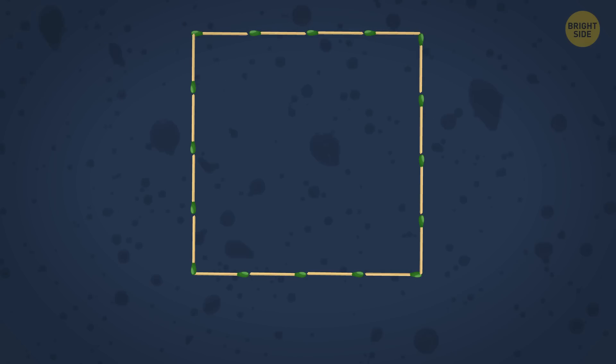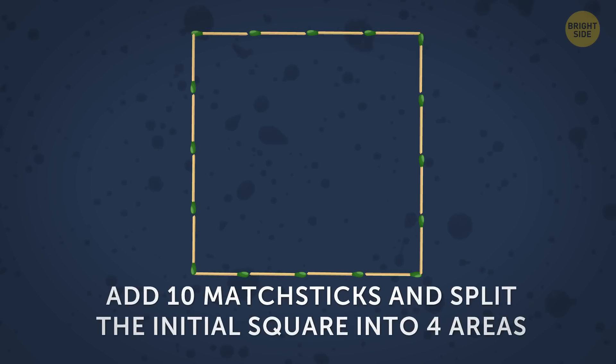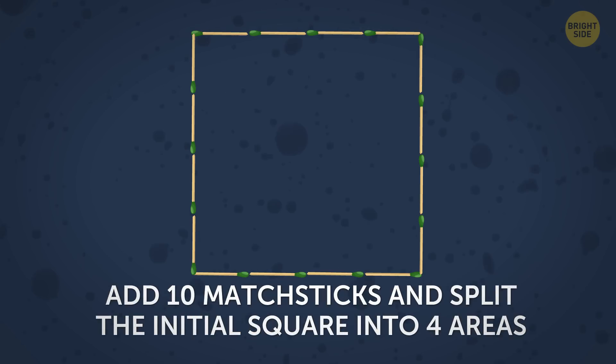Let's go ahead and take a look at the next riddle. Here's a square. Each side is built of 4 matchsticks. The challenge is to add 10 matchsticks and split the initial square into 4 areas with the same size and shape.